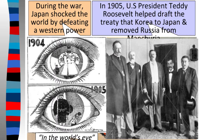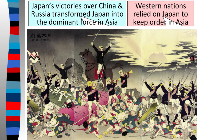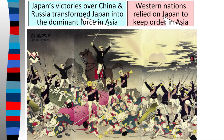Japan's victories over China and Russia continued transforming it into the dominant force in Asia, and Western nations relied on Japan to keep order there. Unfortunately, Japanese imperialism surged again in the 1930s and 40s, and that's really what leads into World War Two — Japan started wanting to take over more territory and began conquering small islands throughout the Pacific. The brutal way they did it put them in the spotlight for the Pacific side of World War Two. That's all on Japan — next time we'll talk about imperialism as a result of the United States.